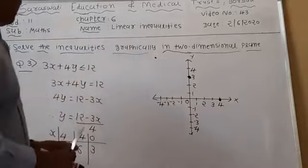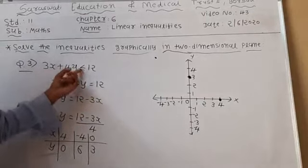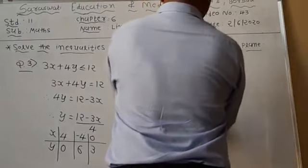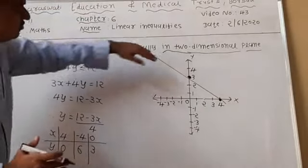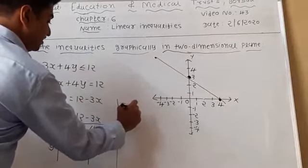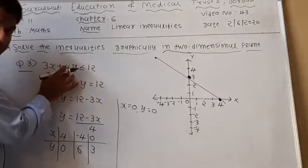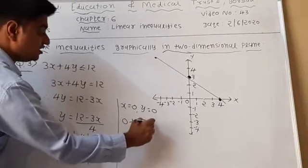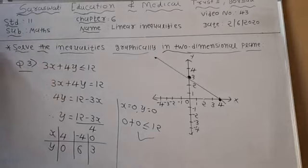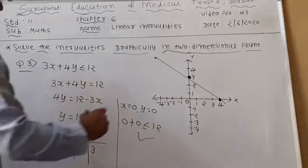Since less than or equal to form is present, we draw a dark (solid) line through the points. Now decide which side to shade. Consider x equal to 0 and y equal to 0, substitute in the main equation: 0 plus 0 is less than or equal to 12, that is 0 less than or equal to 12. This condition is true, so we draw the shaded portion on the origin side.